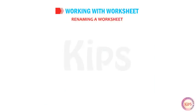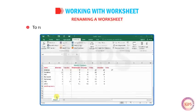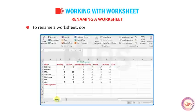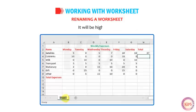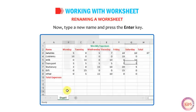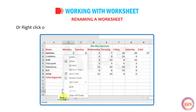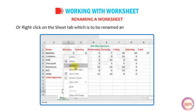Let us learn how to rename a worksheet. To rename a worksheet, double-click the sheet tab you want to rename. It will be highlighted. Now type a new name and press the Enter key. Alternatively, right-click on the sheet tab and click on the Rename option.